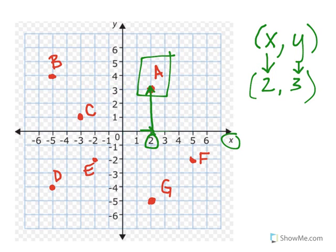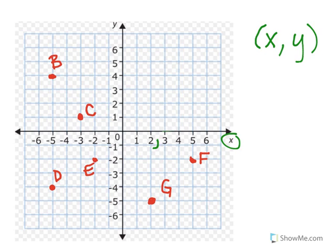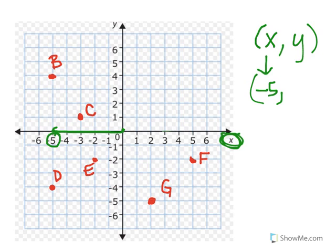Let's go ahead and locate point B. Rules stay the same — x comes before y. Here's my point of origin. This time, x comes first as always, but I'm going to move to the left: negative one, negative two, negative three, negative four, negative five. My x is negative five. And my y — I've got to go up. Y goes up and down; in this case I'm going to go up one, two, three, four. So my y is a positive four.